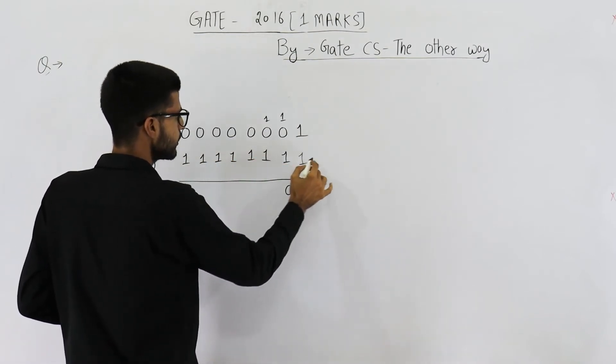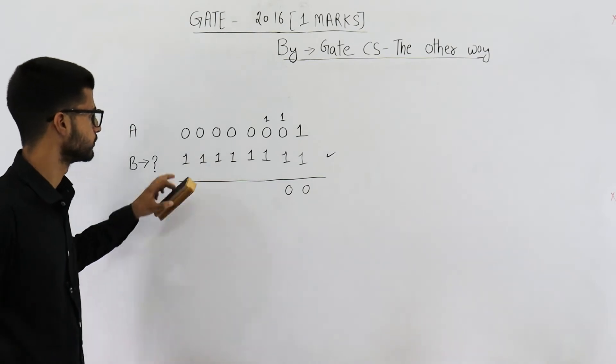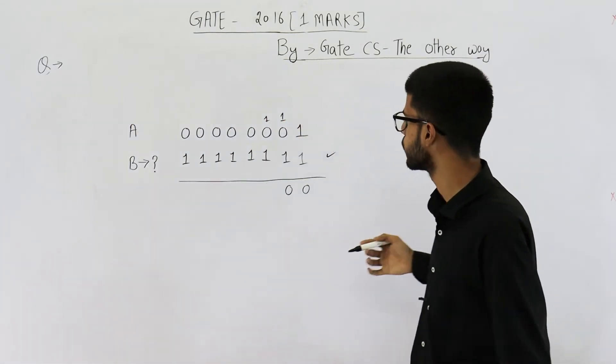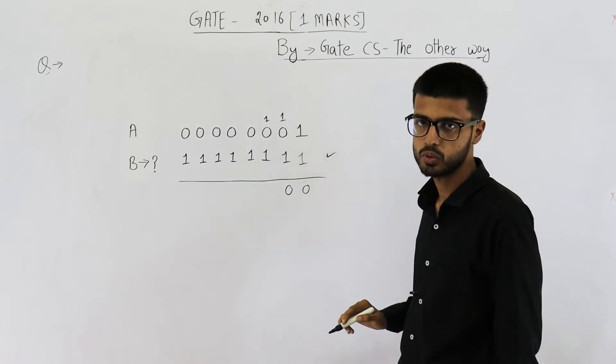This will be the value of B. We have 8 1s. Now, it's been told that this is represented in 2's complement form.